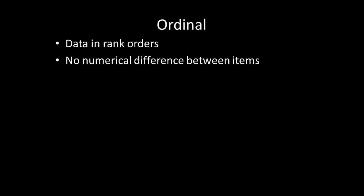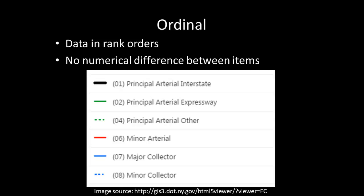Ordinal data are data in rank order such as first, second, and third. However, there is no degree of numerical difference between items. A general example of ordinal data would be a survey questionnaire response such as very good, good, acceptable, poor, and very poor. Although there is a ranking between the responses, there is no indication of what specifically signifies one category from another. In a mapping context, this image shows road networks that display a ranking of different roads based on federal, state, and county jurisdictions. Like nominal data, ordinal data are also considered a form of qualitative data.